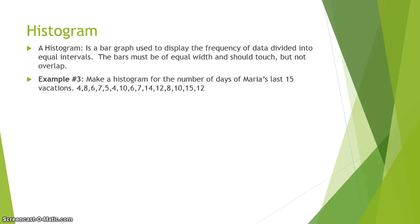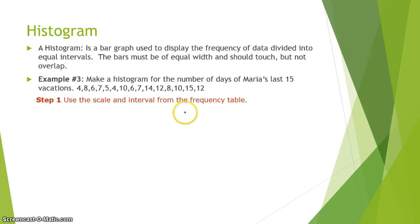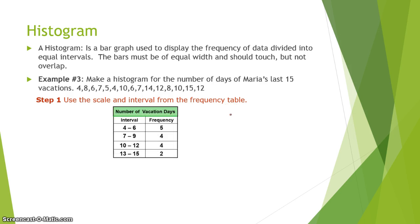Next, we'll look at histograms. A histogram is a bar graph used to display the frequency of data divided into equal groups. You'll use a frequency table to help you create a histogram. For this example, we're creating a histogram for the number of days of Maria's last 15 vacations, using the same data as before.